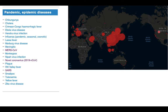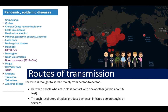Everywhere with high tourism influx has been affected — Europe, California, the east and west coasts of North America, Australia, India, central Asia, and Middle Eastern countries such as Dubai, Iran, and Iraq have also been affected.